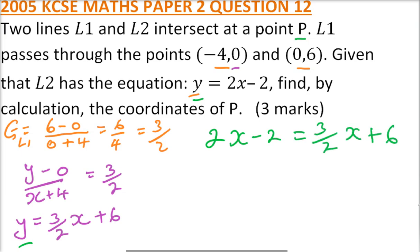So we put the like terms together. This is 2x minus 3 over 2, or 1.5x. This becomes positive 8. This is 1.5, so it means we have 0.5x equals 8, meaning x equals - multiply both sides by 2 - x is 16.